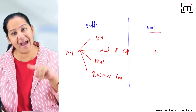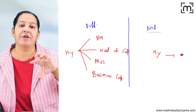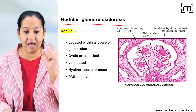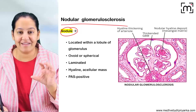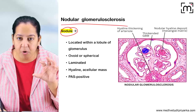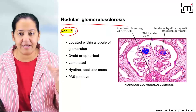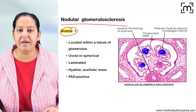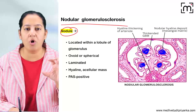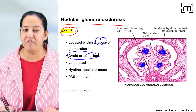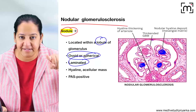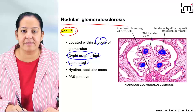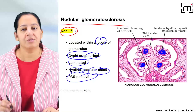In nodular glomerulosclerosis, hyaline is also deposited but only in the form of small nodules — not in the basement membrane, mesangium, Bowman's capsule, or fibrin cap. The nodules are spherical or oval in shape, laminated with concentric layers, and represent an acellular, PAS-positive hyaline mass.